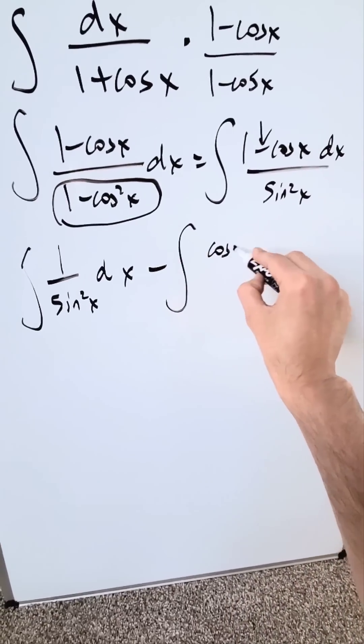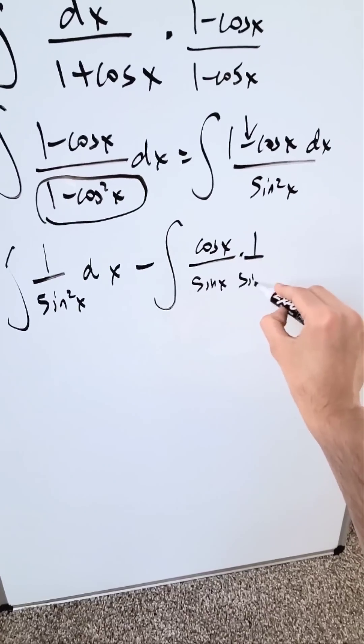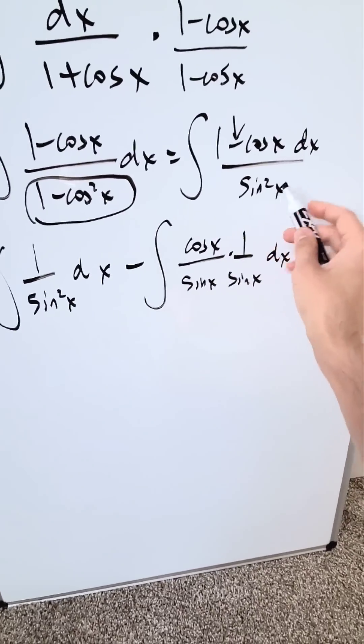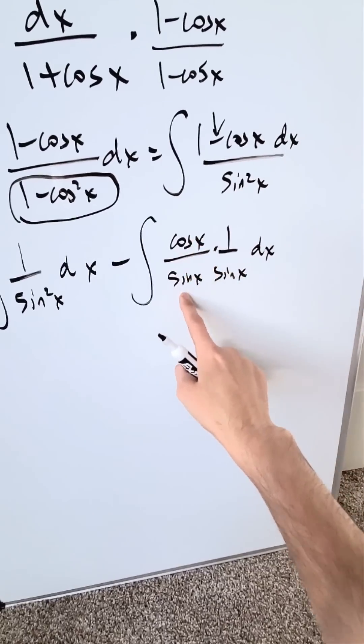Then I have another integral, cosine x over sine x times 1 over sine x. I've just separated this part even further. I'm looking at a cosine x over sine square x. This is what I have, cosine x over sine x sine x.